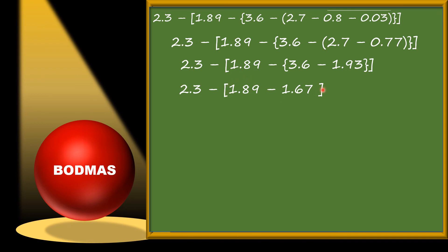Now only the big bracket remains with subtraction: 1.89 minus 1.67. We do this subtraction and get 2.3 minus 0.22. At last, we subtract again and get 2.08.